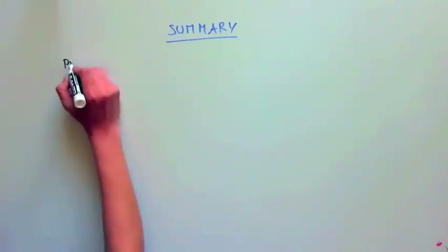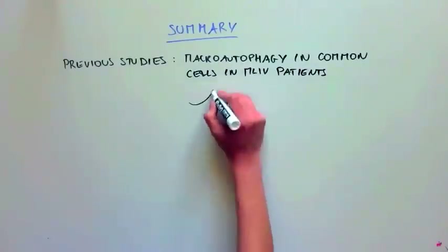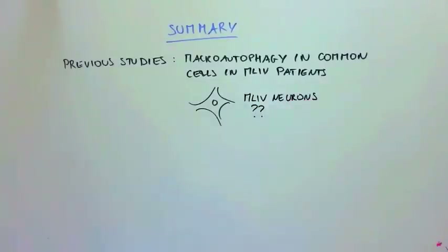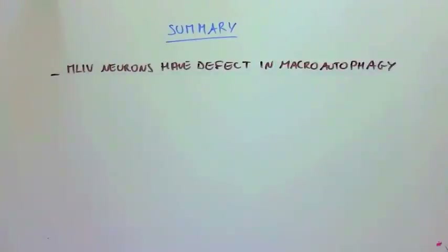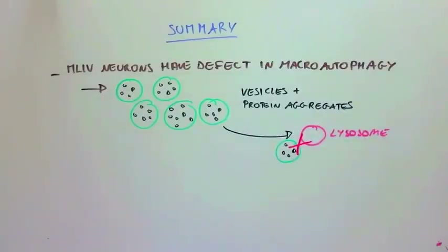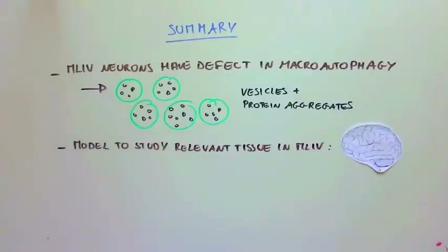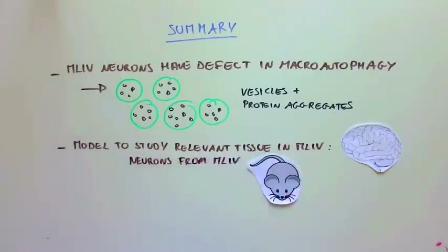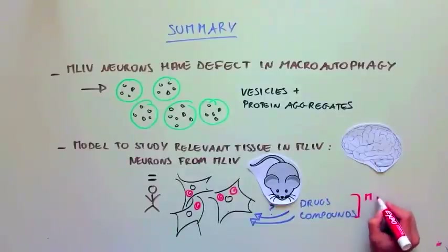So what did this study show? Although previous studies had looked at the macro-autophagy pathway in human cells found throughout the body, no one had studied what happens in the neurons in ML4 disease. This study showed, for the first time, that ML4 neurons have a defect in the macro-autophagy pathway, which causes accumulation of vesicles because the vesicles cannot fuse with the lysosome and be broken down. This study also established a model to study a very relevant tissue in ML4 disease — the brain — by isolating neurons in ML4 mice, which are very similar to the human disease. Using these cells will provide a great way to look for drugs that can reduce the number of storage bodies or vesicles, which may improve survival of the neurons and ML4 symptoms.